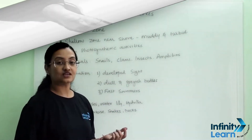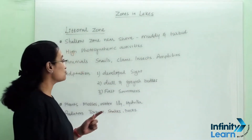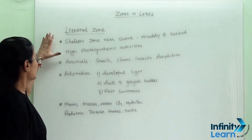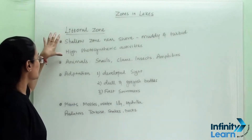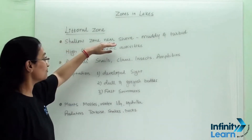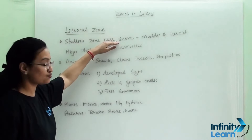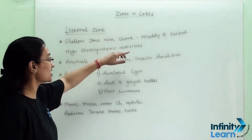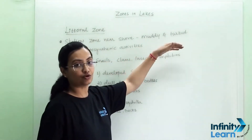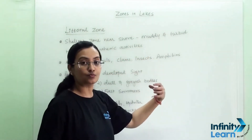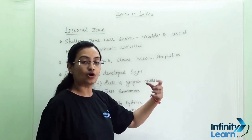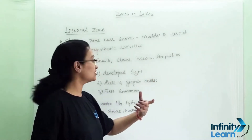Let us start with our first zone, which is the littoral zone. The characteristic of this zone is that it is a shallow zone near the shore, and that's why it is muddy and turbid, because shore mud and soil always mix with the water.